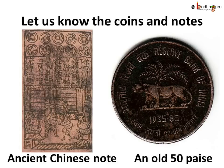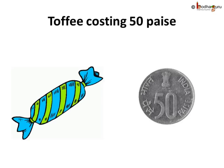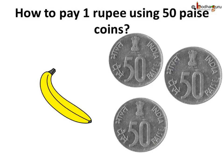They look very beautiful. You know, the first paper note was used in China long long ago, in the 7th century. So how do we buy things? Say, a toffee costs 50 paise. So we can pay a 50 paise coin if we have one. But say, if you want to buy a banana that is costing 1 rupee and you only have a few 50 paise coins, what would you do?